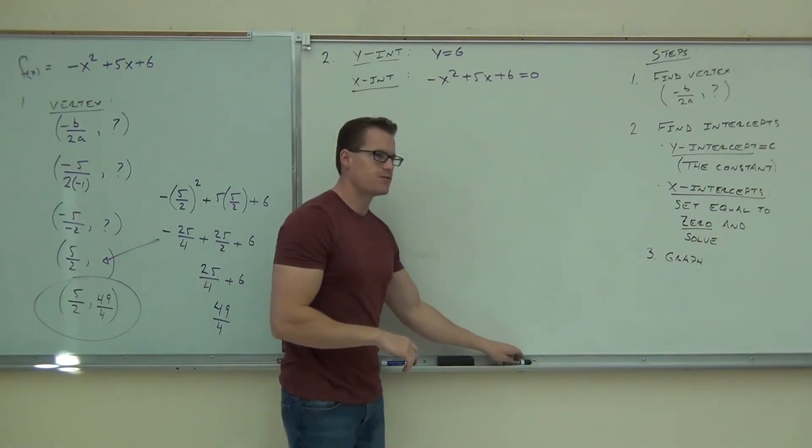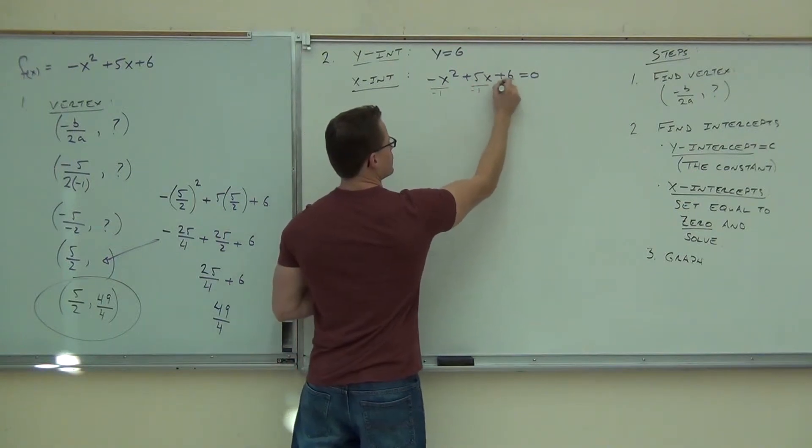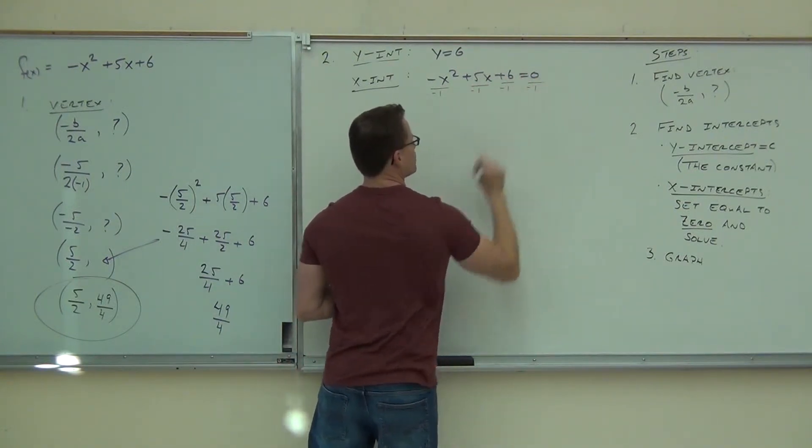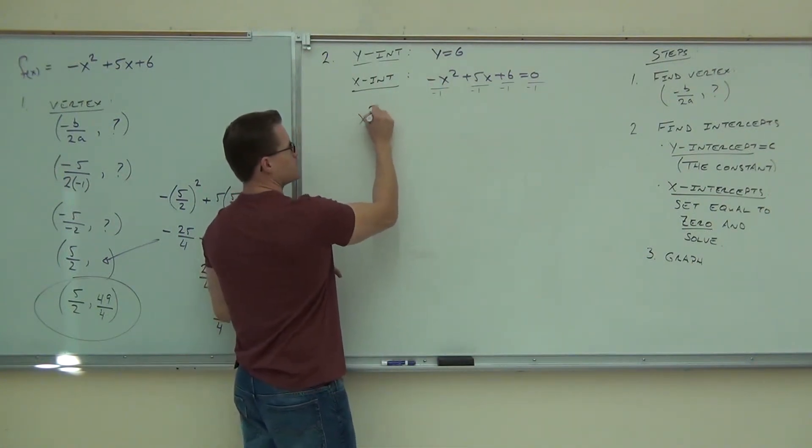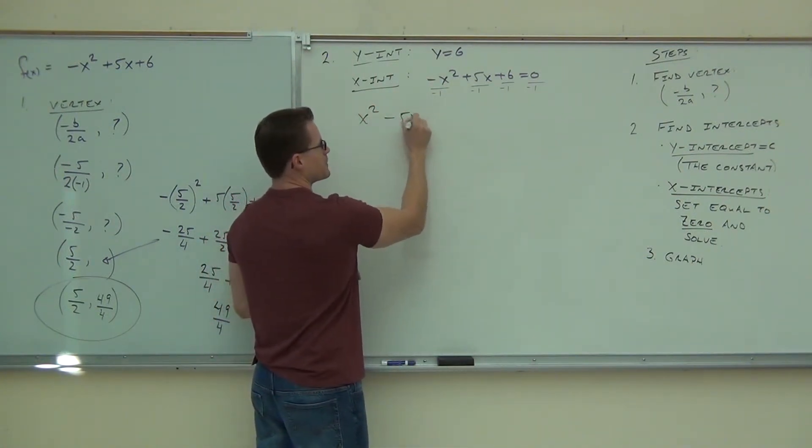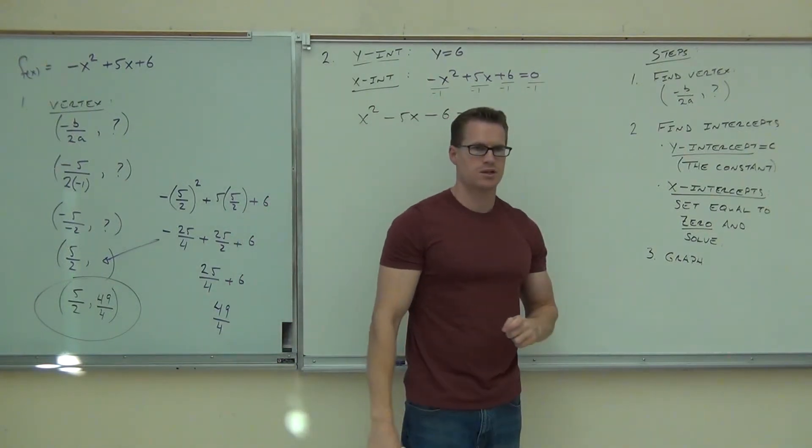Divide everything by negative 1. What that's going to do is change every single sign. Do you see what I'm talking about? Just do that. If I divide everything by negative 1, check it out. What's this first term going to become? x squared. Second term's going to be minus 5x, then minus 6, and I'm still going to have 0. Do you see it?